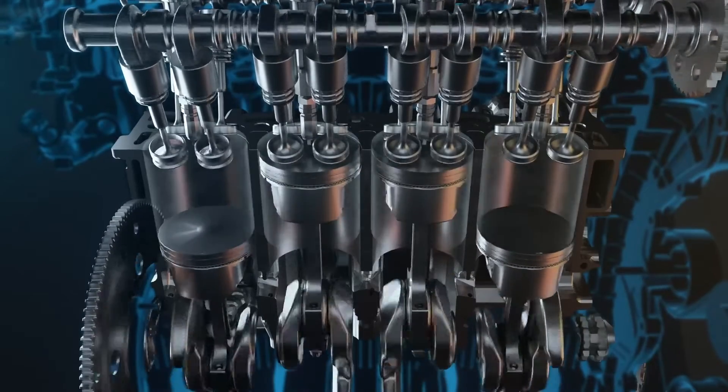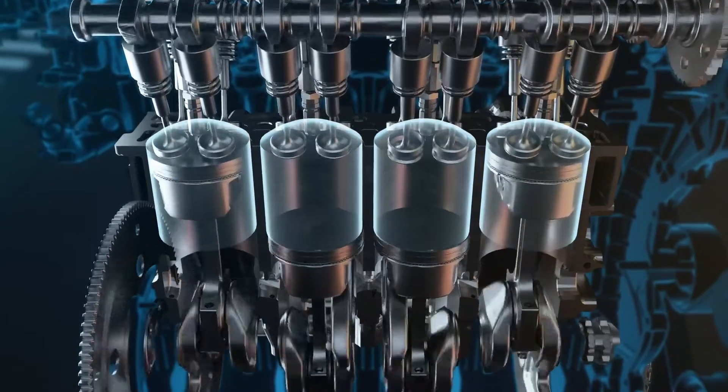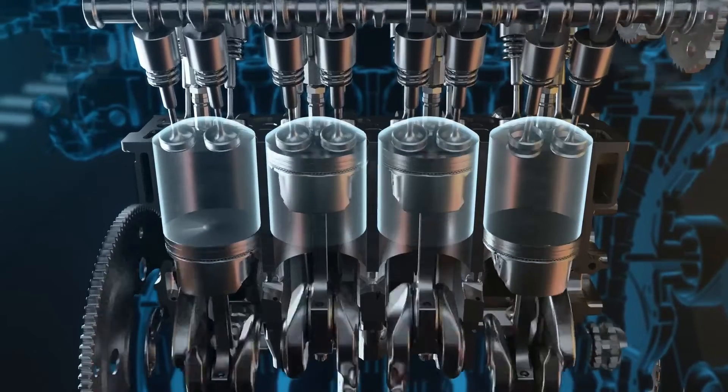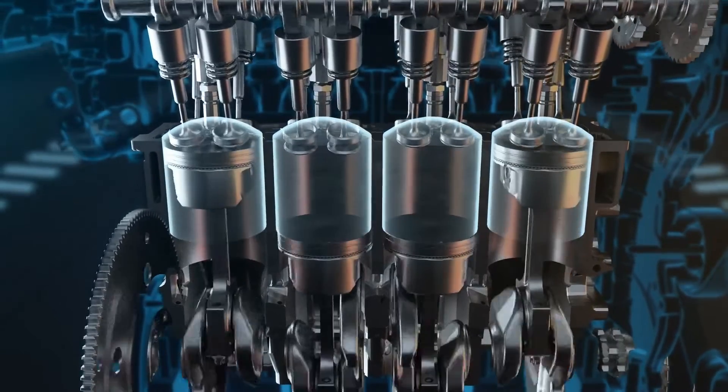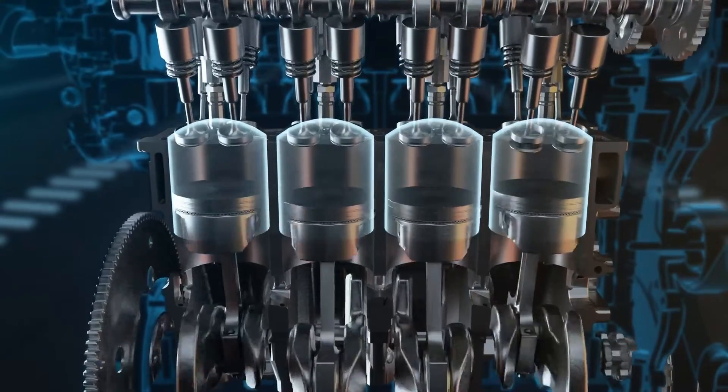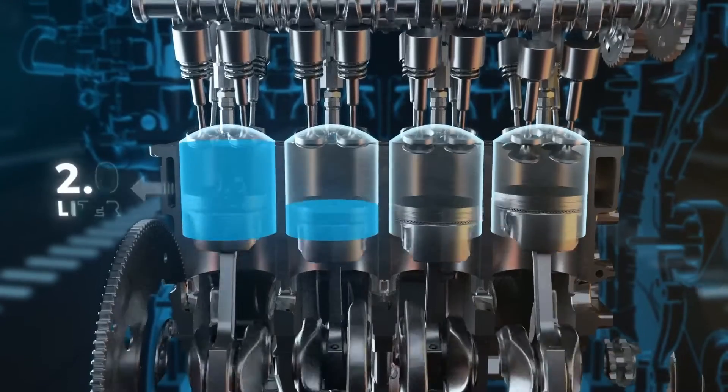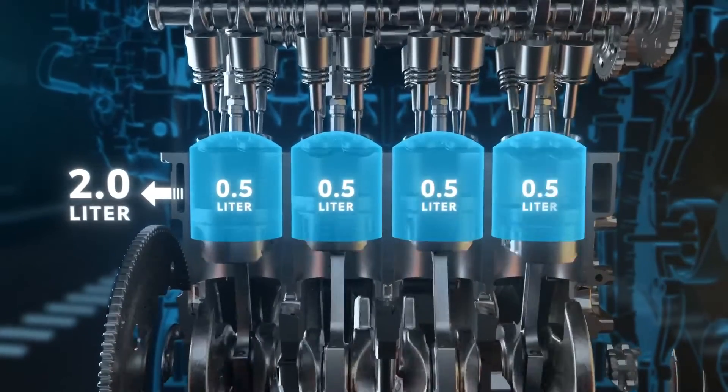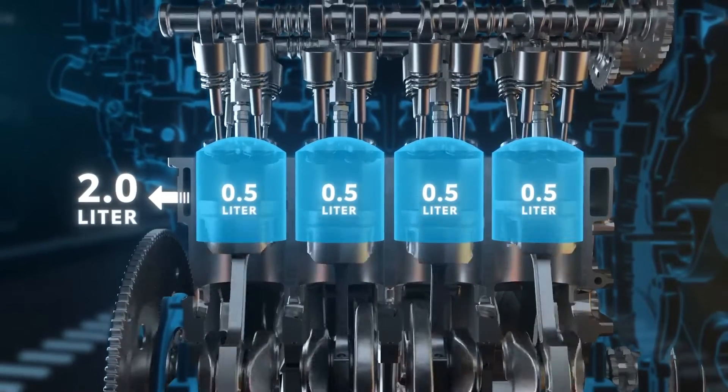All right, so what about those other numbers you always see? 2.0, 3.5? Well, that refers to the engine's displacement, often simply thought of as its size. That number is literally the volume, in liters, that the pistons displace with every engine cycle. So essentially, if you were to fill up the cylinders of a two-liter engine with liquid, it would take two liters. And if it's a four-cylinder engine, each one displaces half a liter.